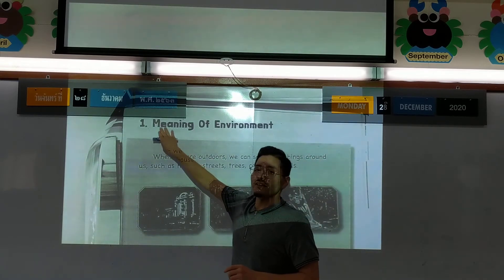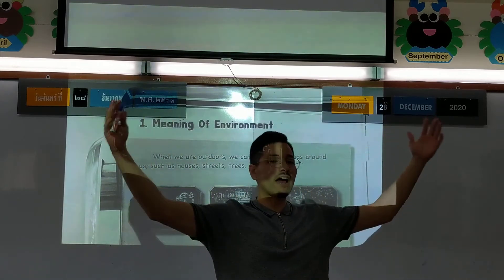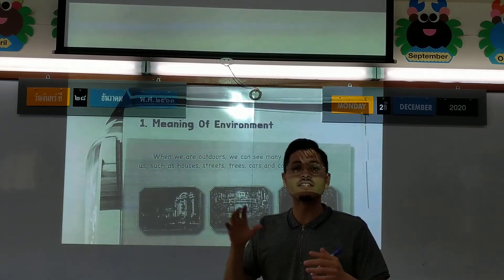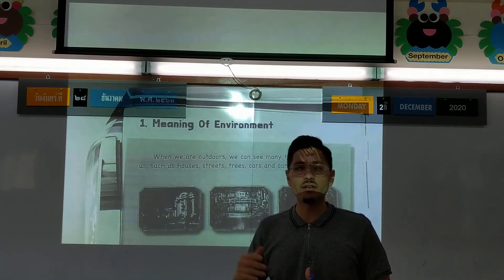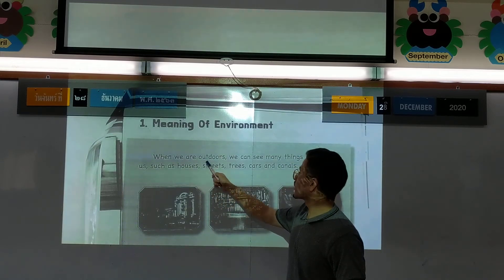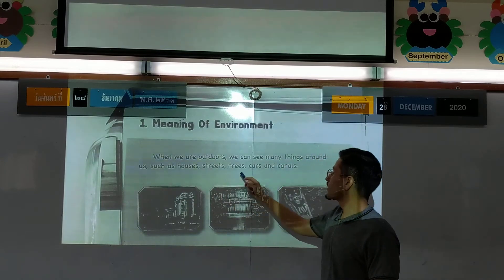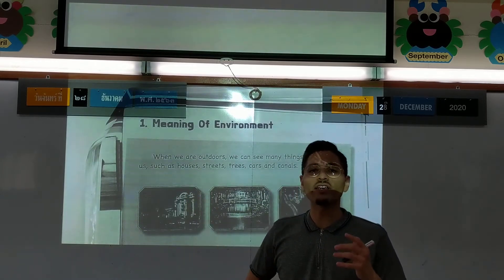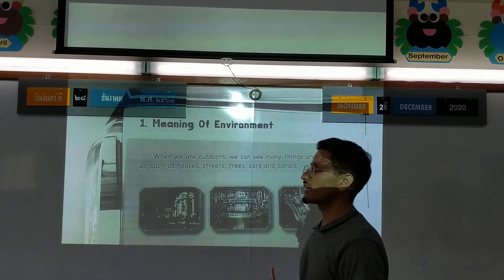What is the meaning of environment? When we're outdoors, that's an environment. When we're inside the school, that's an environment. An environment is different places that surround you - your home is an environment, the big sea is an environment. When we are outdoors we can see many things around us: houses, the street, the cars, the trees, and the river.